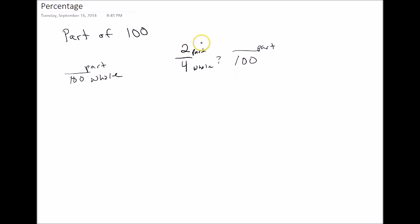So if we take 2 times 25, we know we get 50. And so 2 fourths is equal to 50 one-hundredths.